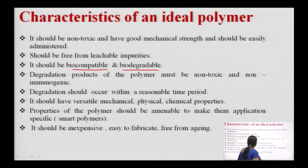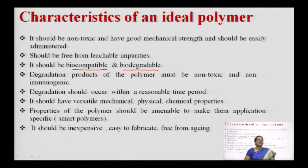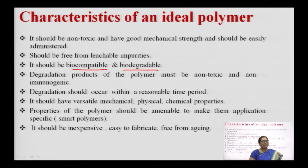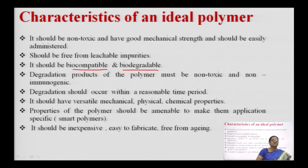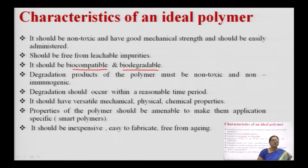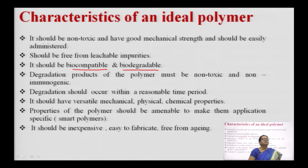The polymer should have versatile mechanical, physical, and chemical properties. This will help in the application of polymers for different uses. However, it is desirable but a single polymer never has all these ideal characteristics — we may have to use a combination or put polymers to selective use. Properties of the polymer should be amenable to make them application-specific.